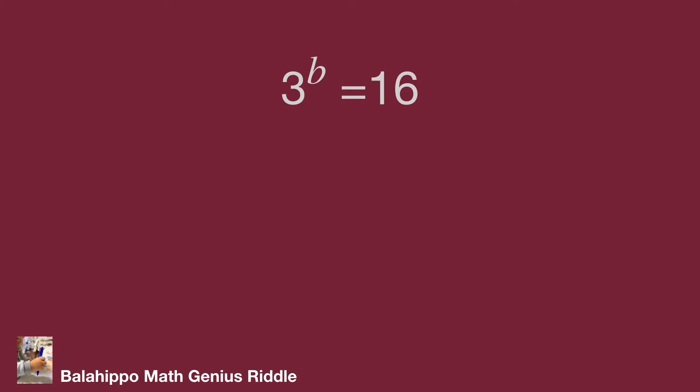Next, use the equation 3 power of b equal to 16 to generate ab. Power of a both sides. We get 3 power of ab equal to 16 power of a.